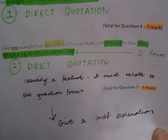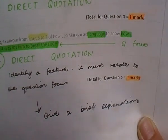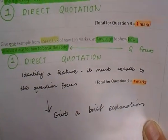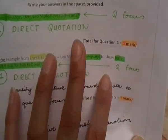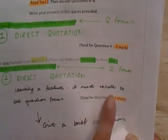So there, what language feature have we got? It was a simile, that comparison using like or as. So we could give the quote and say the simile, give the quote...